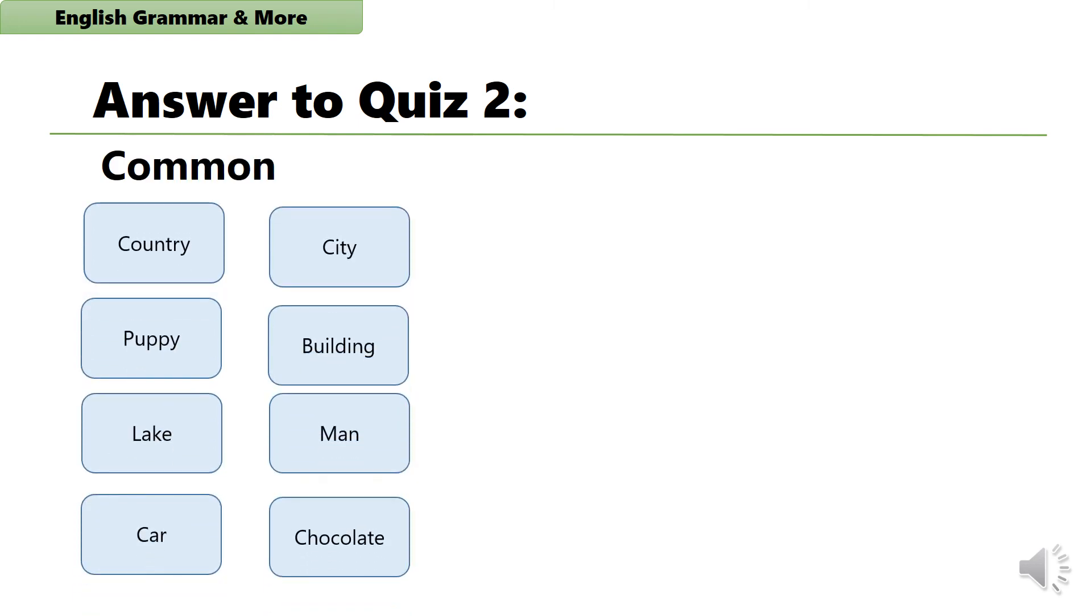All right. Here we've got the correct answers to quiz two. Common nouns included country, puppy, lake, car, city, building, man, chocolate,